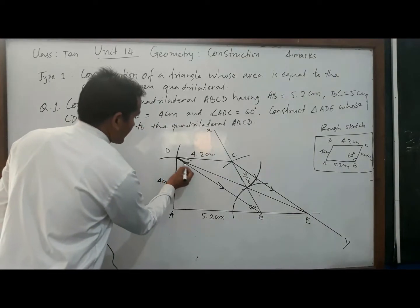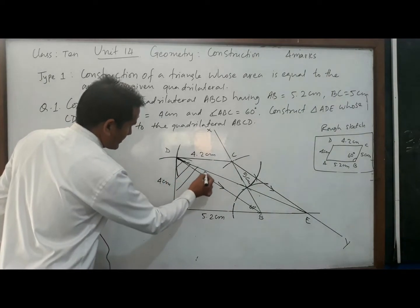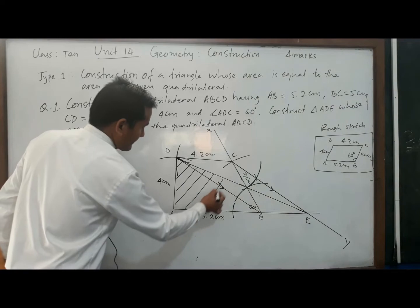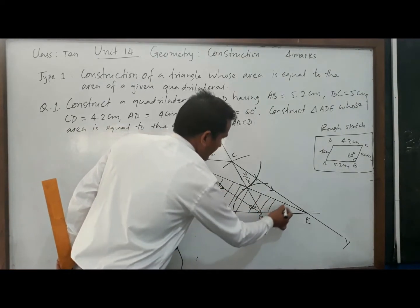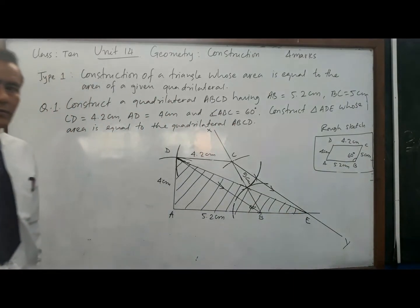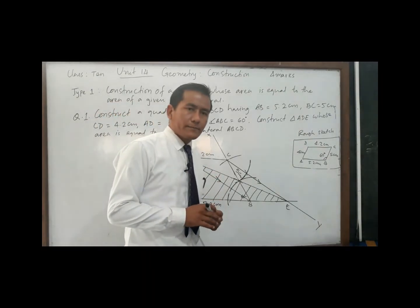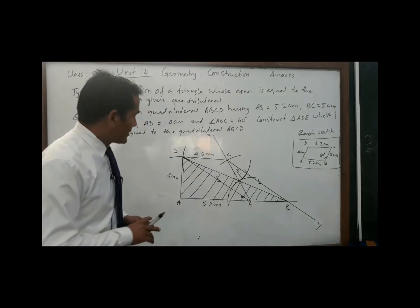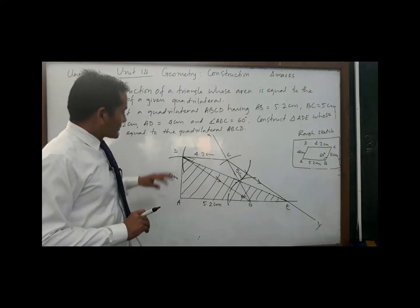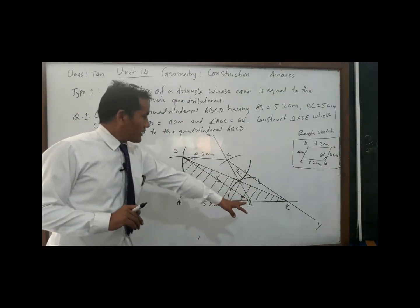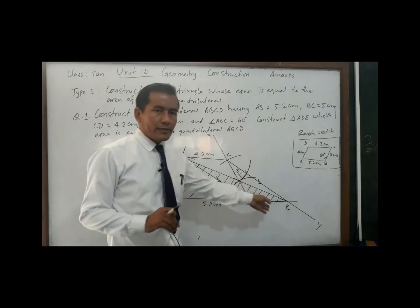Now we have obtained triangle ADE, whose area is equal to the area of quadrilateral ABCD. I am shading triangle ADE for your understanding — it is not compulsory to shade. To summarize: we constructed quadrilateral ABCD, joined diagonal BD, then from vertex C drew a parallel line CY to BD, produced AB to meet CY at E, and joined DE to complete triangle ADE.